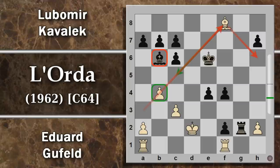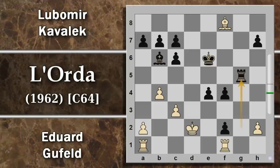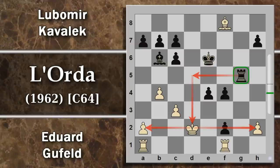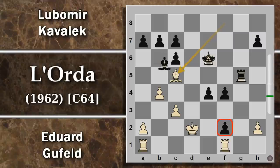Qui il nero poteva anche ignorare tutto e catturare in h2, probabilmente sarebbe bastato. Invece decide di fare lo splendido: torre g5, una mossa che sembra una semplice ritirata. Cosa vorrà fare questa torre in quinta traversa? Gufeld gioca alfiere c5, e invece di cambiare il preziosissimo alfiere, lo scopo della torre si rivela: torre per c5, un ulteriore sacrificio di qualità.